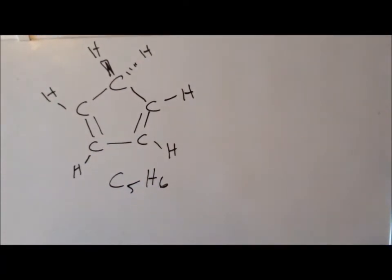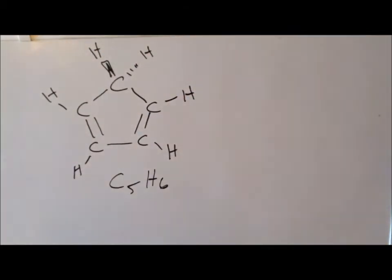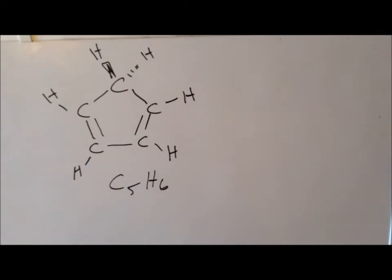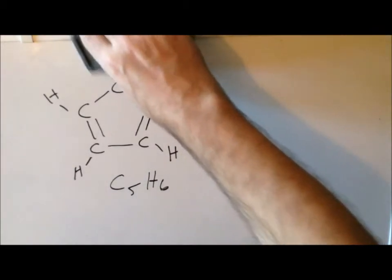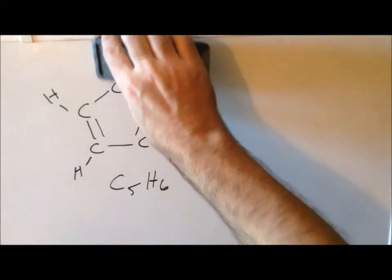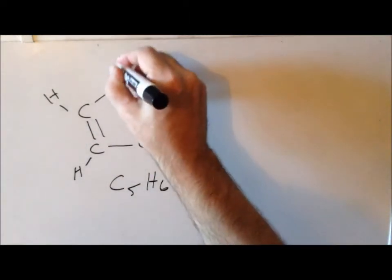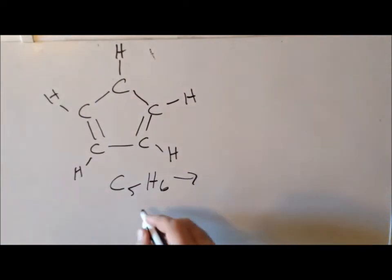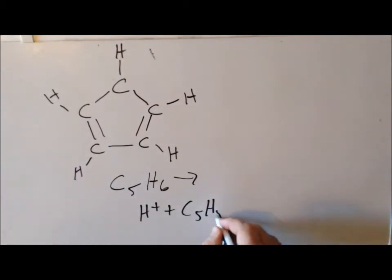This molecule is mostly planar, but we have one hydrogen above and one hydrogen behind the plane. Interestingly, even though it's a hydrocarbon, it actually has an appreciable acidity — it will actually lose H⁺. And if it loses H⁺, we get a planar molecule.